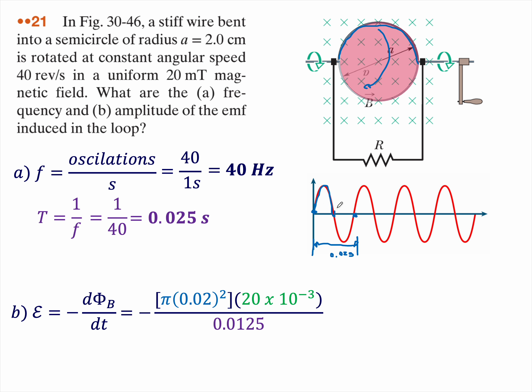What's the change in flux? Well, it's going to be the area of that loop. Remember, that's the amount of magnetic flux that we're losing, which is going to be π r². The 0.02 comes from the 2 centimeters. The 20 milliteslas is this green number right here.